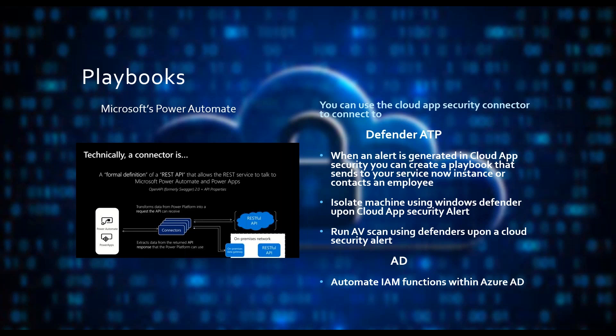What if you've got an alert from a machine that is infected? Instead of having someone log in and grab a manual playbook to figure out the processes to isolate that machine, where can we automate that? We can write playbooks that automate isolating that machine using Windows Defender or other tools. If you're not using Microsoft Power Automate, there are other tools that will provide these things. What's important is that we're thinking that way — thinking about what would happen if, and how we can get to it quicker through automation.